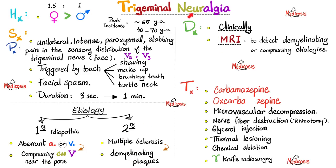How can we manage trigeminal neuralgia? Pharmacological options include carbamazepine and oxcarbazepine. Non-pharmacological options include microvascular decompression, nerve fiber destruction, glycerol injection, thermal lesioning, chemical ablation, and gamma knife radiosurgery.